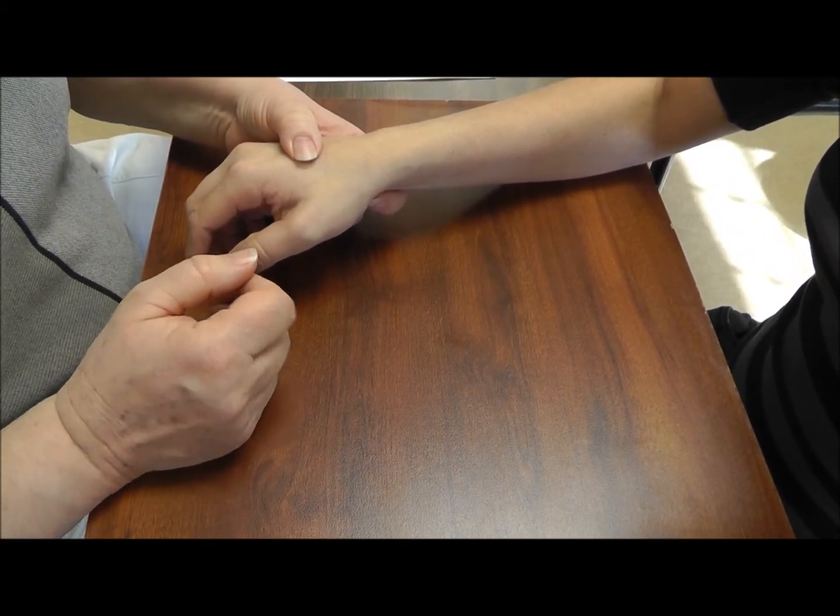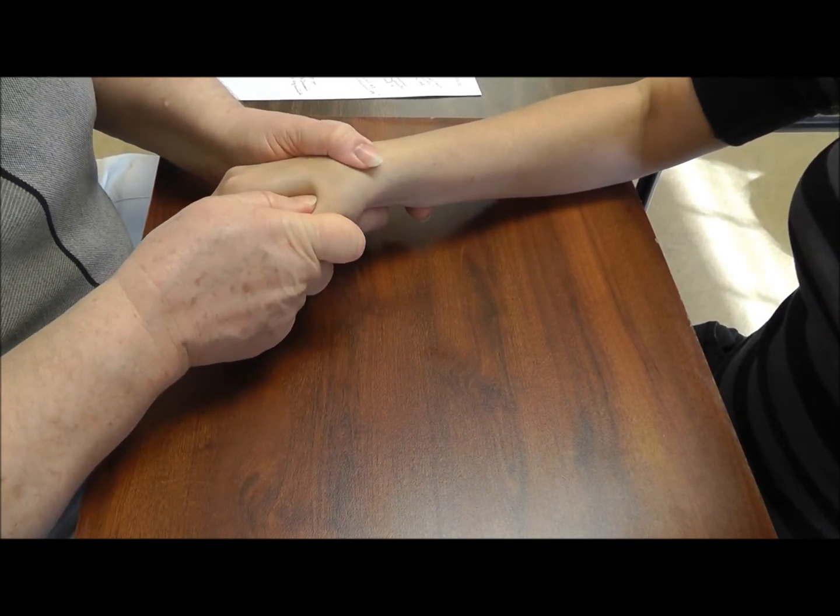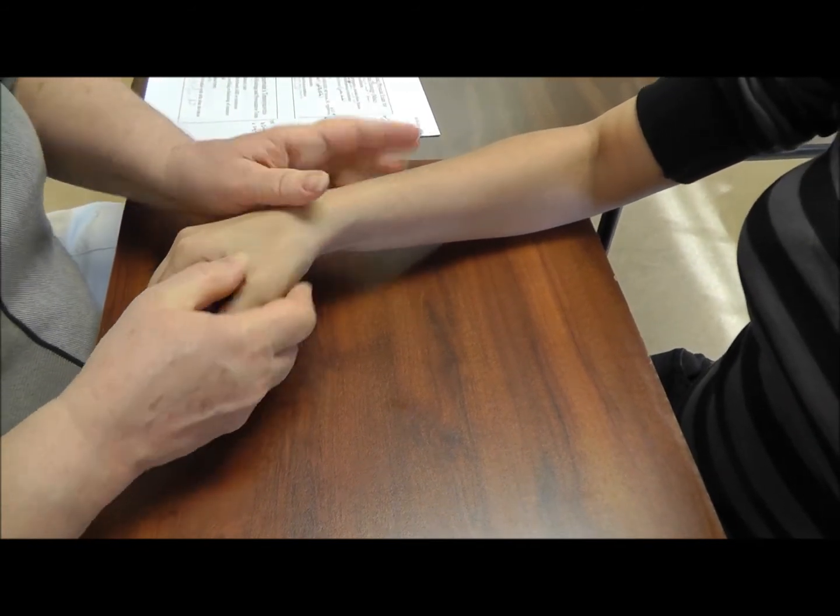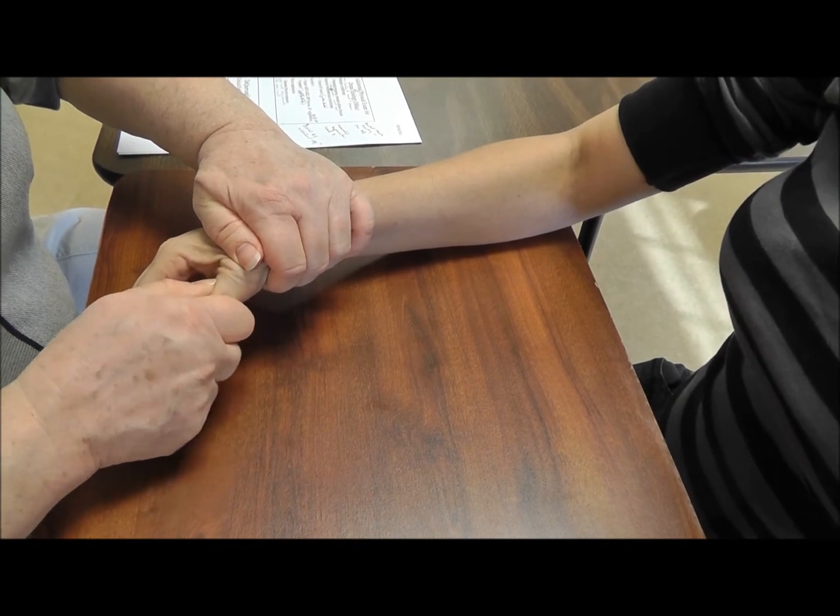The trapezium is a pretty common finding. You can do the grind where you take the metacarpal, you push down, and just grind up against the trapezium. You can do grind here at the metacarpophalangeal joint as well.